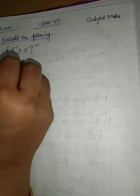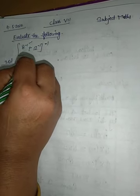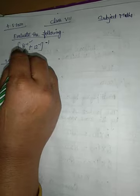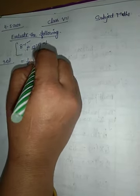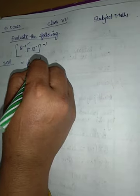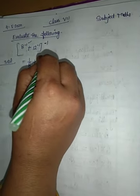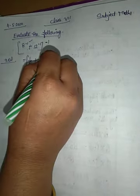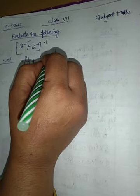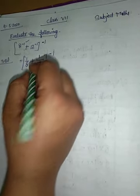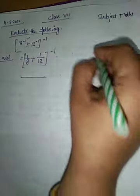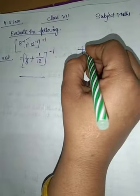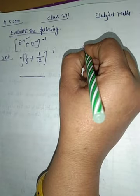I will explain you — listen carefully. Because here is a minus sign, it will be 1 upon 8. Now it is plus sign, so you have to take plus. It also has a minus sign, so you have to reciprocal it: 1 upon 12. Now it has the power minus 1 also. Minus power 1 means you have to reciprocal. First of all you will take the LCM of 12 and 8.